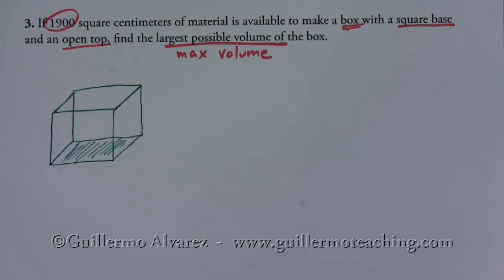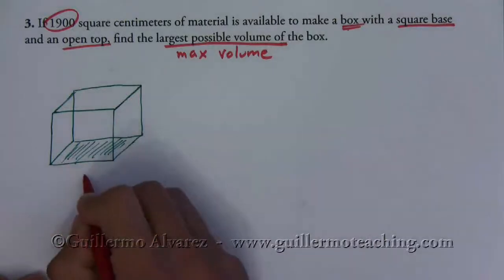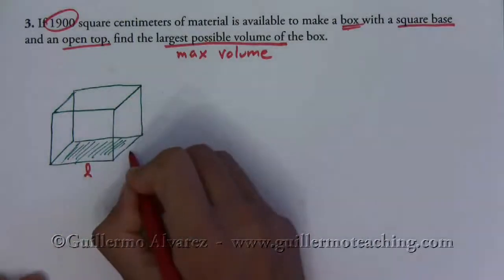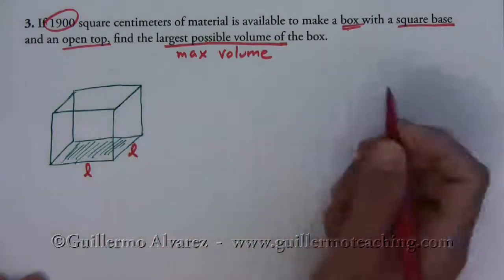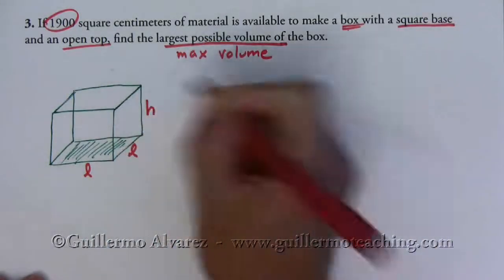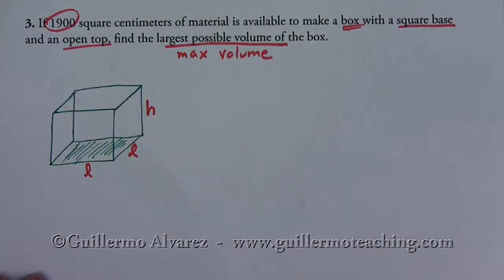That's my box and since it has a square base, that means that the sides of the box are going to equal each other and then the height might be different. The height is allowed to change. So once we have everything labeled...